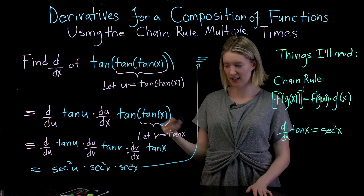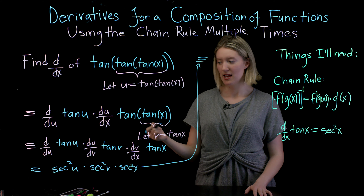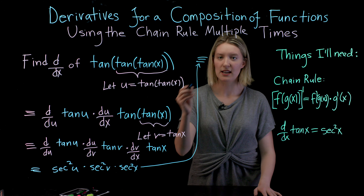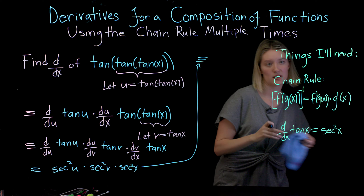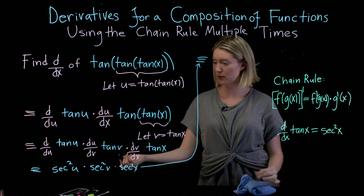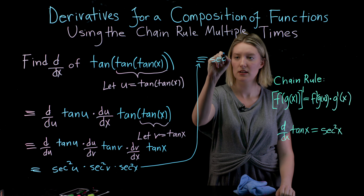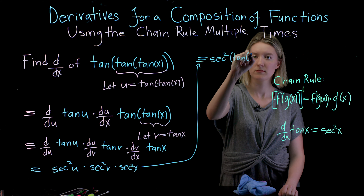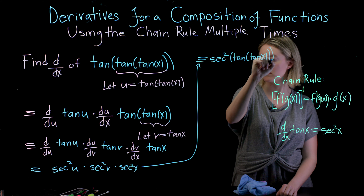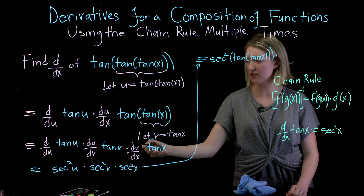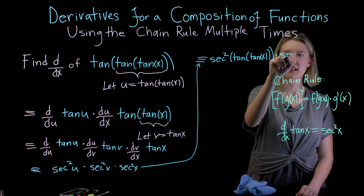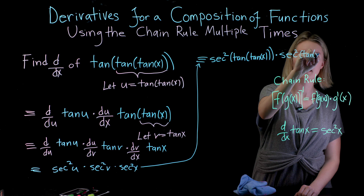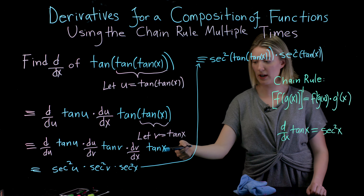We're almost done. The last thing I do is rewrite all of my derivatives, replacing the placeholders with the functions they were actually representing. So instead of secant squared u, I'm going to have secant squared of tangent of tangent of x, times secant squared of v — where v was tangent of x — giving secant squared of tangent of x, and then lastly times secant squared of x.